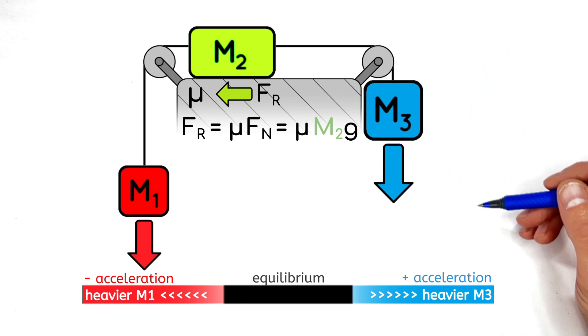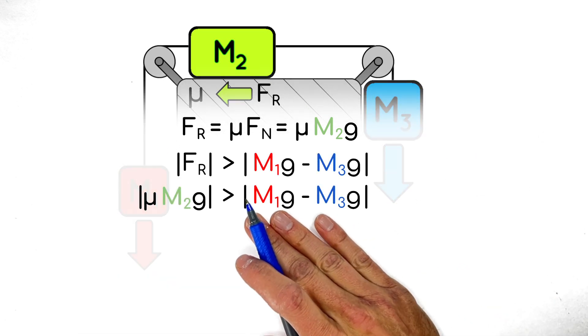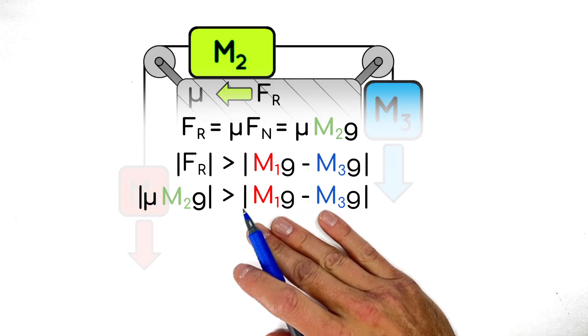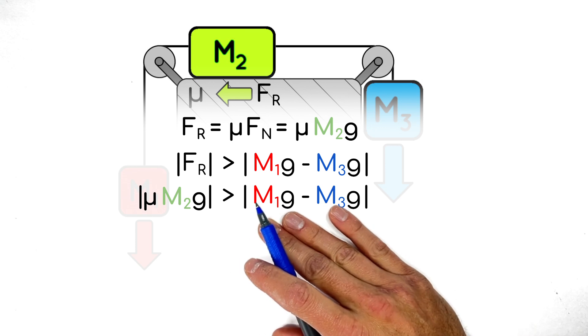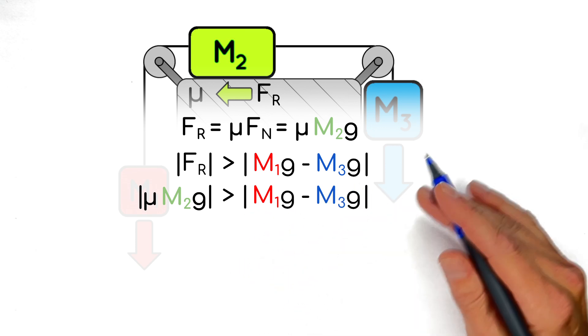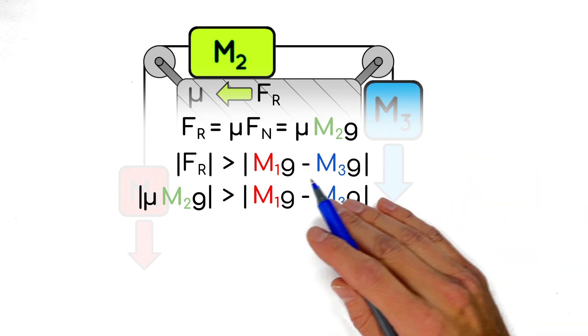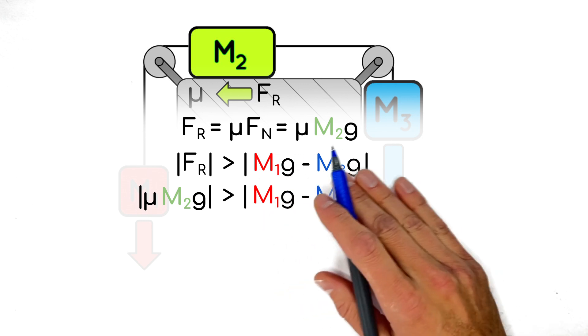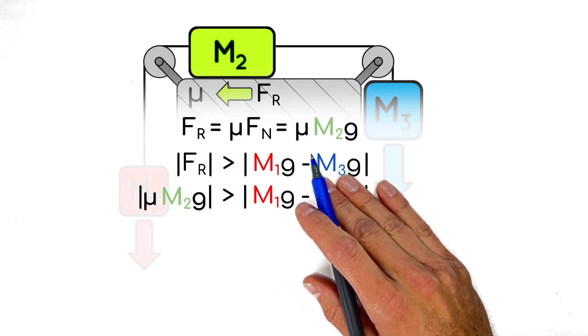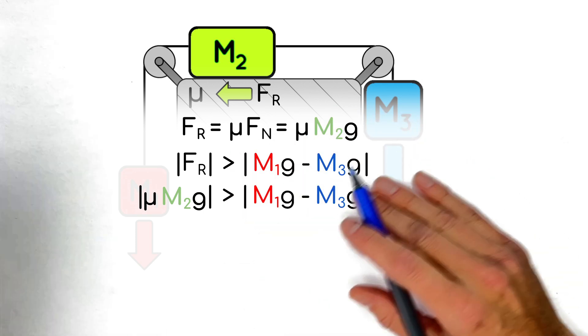So turning that concept into math, so long as the maximum possible friction force is greater in magnitude, that's these little absolute value symbols, than the difference in the hanging weights, again a magnitude, then nothing's going to go anywhere. I say magnitude because we don't really care about the direction of either friction or the difference in these weights. It's just as long as friction is stronger than the difference in the weights, nothing's going anywhere.